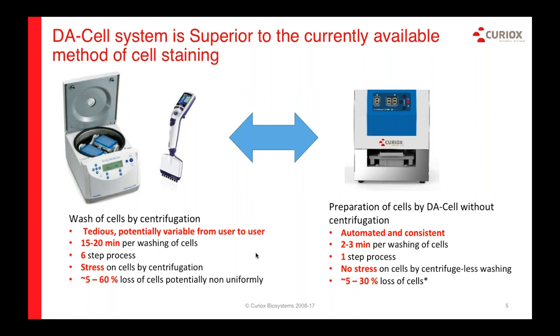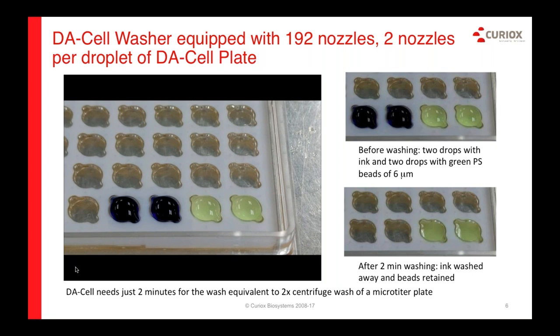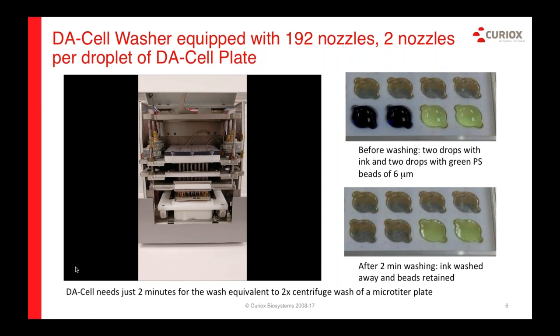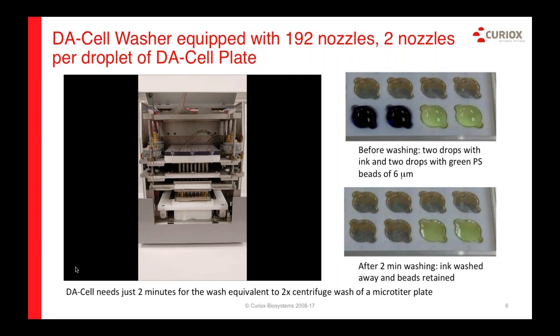I'm going to show a short movie clip of how the DA cell washer runs. In the movie, there are two wells with droplets of green fluorescent polystyrene beads and two droplets of food coloring solution. After 20 minutes of rest, beads settle on the plate just like cells would. A user places the plate in the washer and hits start. The fluidics head comes down to the plate — it has 192 nozzles total, two per well, one for dispensing and one for aspiration. During the two-minute operation, it performs seven cycles each of dispensing and aspiration.